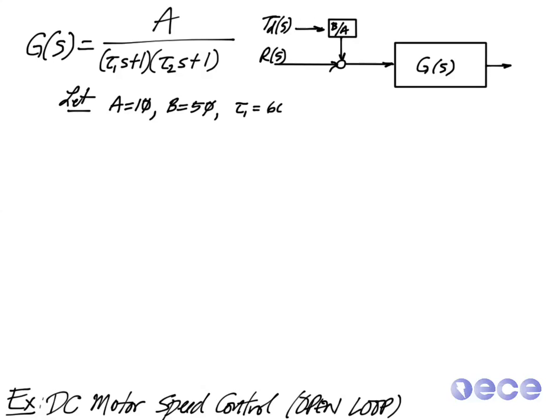So I'm going to let A equals 10, B equals 50, tau1 equals 60, and tau2 equals 600. These are fairly realistic gains for the DC motor that we use several times.